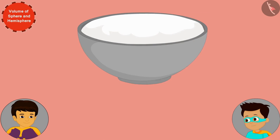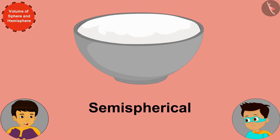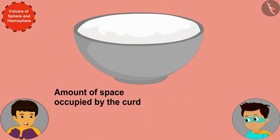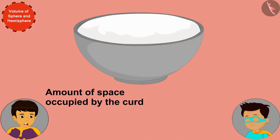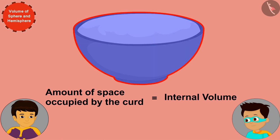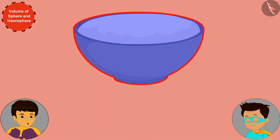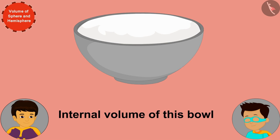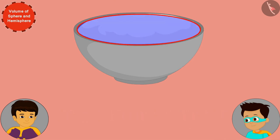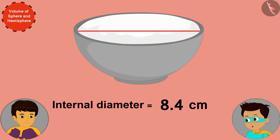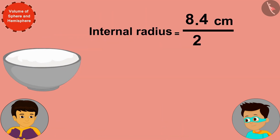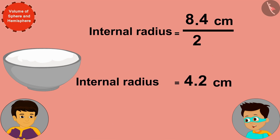The bowl is semi-spherical, and the amount of space occupied by the curd in it will be equal to its internal volume. So first we have to find the internal volume of this bowl. The internal diameter of the bowl is 8.4 centimeters, which means its internal radius is half of that — 4.2 centimeters.